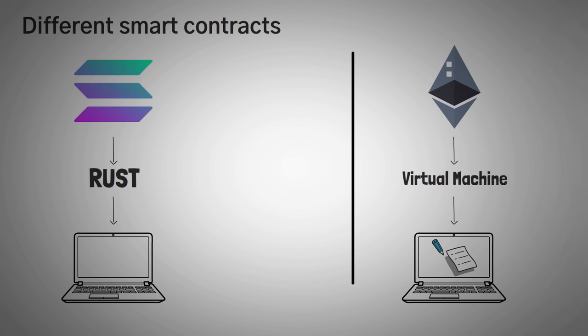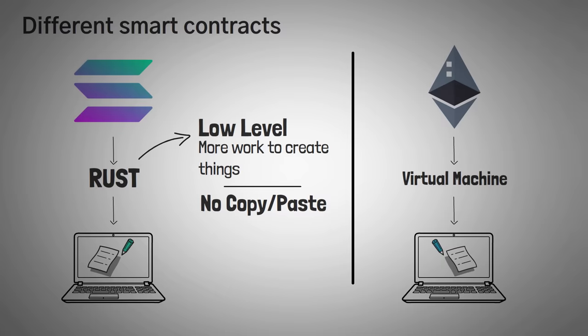Rust is a very low-level language, meaning it's much more powerful, but it does require more work to create things. One downside to this is that developers can't just copy and paste their dApps and projects like many other blockchains can from the Ethereum network. Everything must be coded from scratch.